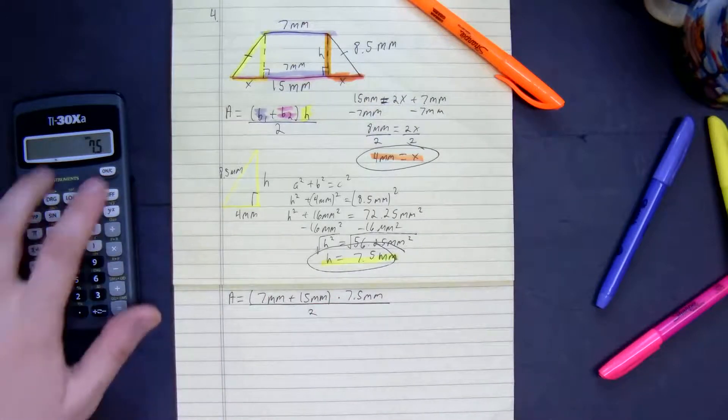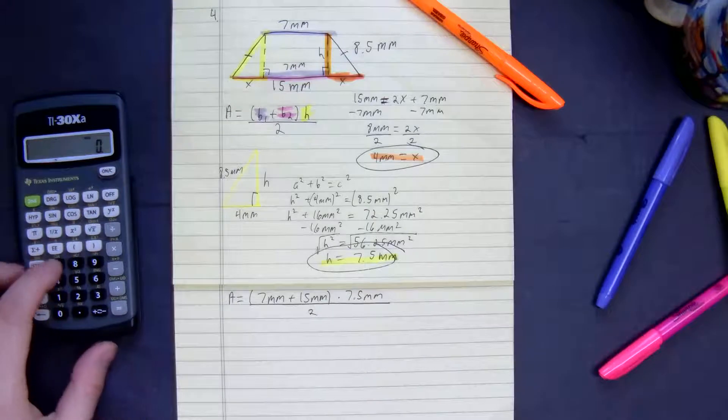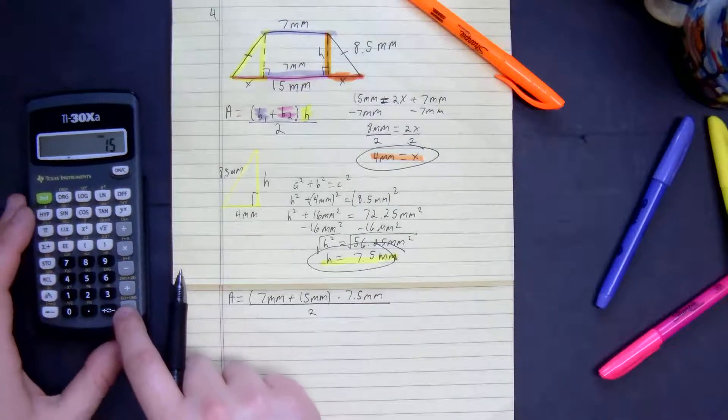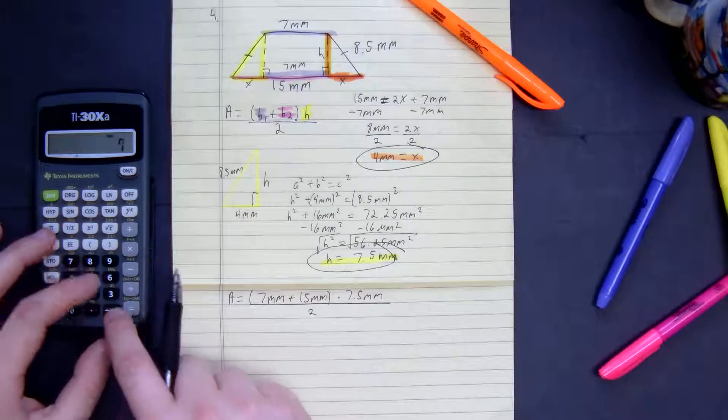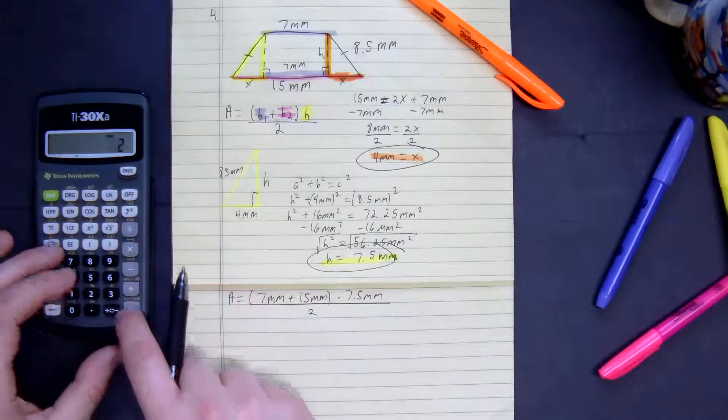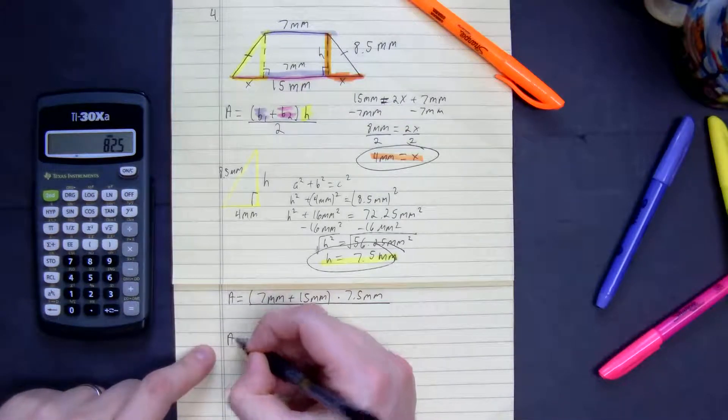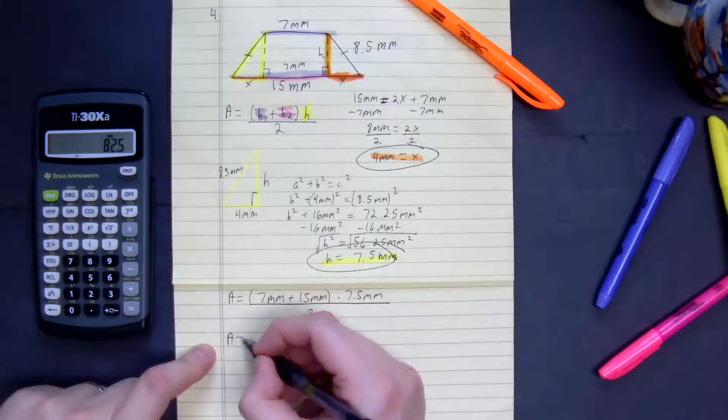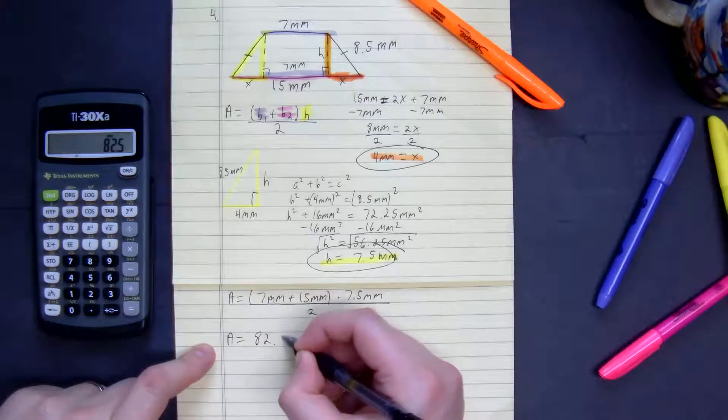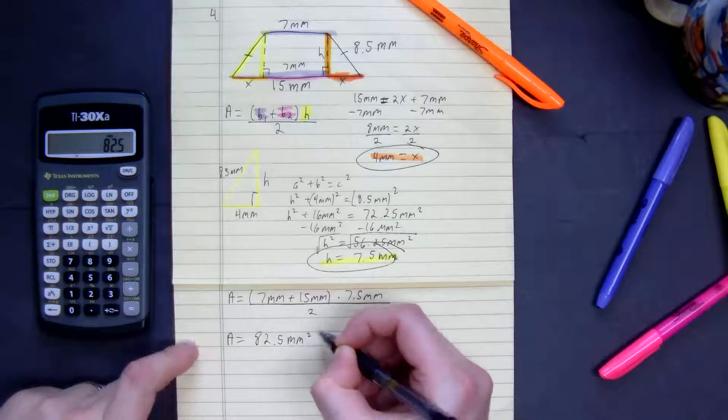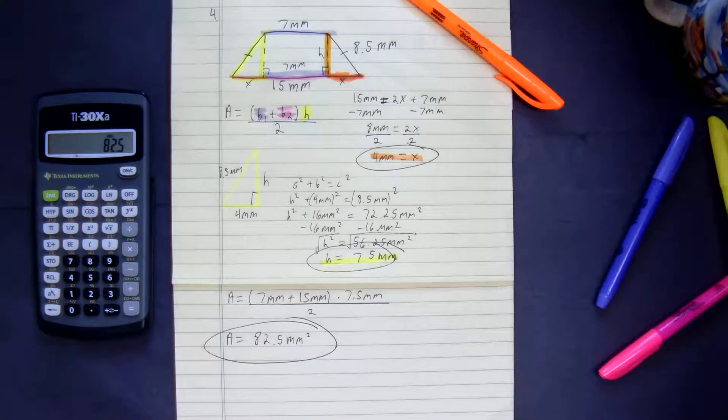So all we do, 7 plus 15 times 7.5 divided by 2. Here we get 82.5 millimeters squared. And that's for number 4.